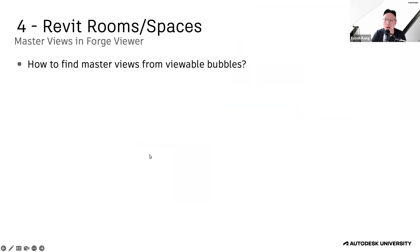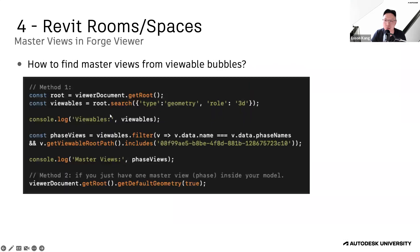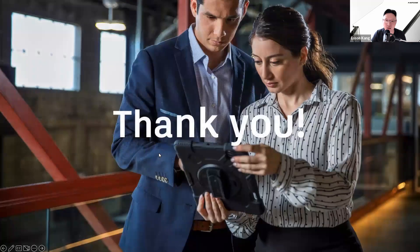So what is the Master View? It's a Forge-only 3D view for Revit models, generated for each Revit phase. It contains all elements in the host model, including rooms and spaces, but no linked model contents. To find the master view in Forge Viewer, there are two approaches: one is to check the model path if it contains 'list spatial' or 'GUID'; another is to use getDefaultGeometry and pass true to the function to get the first master view. That's all for today — thank you for listening.